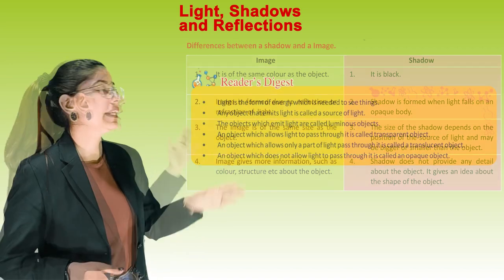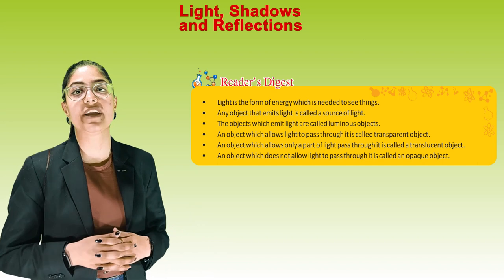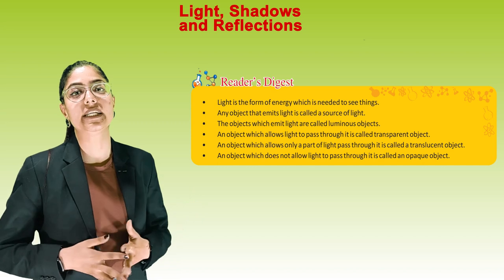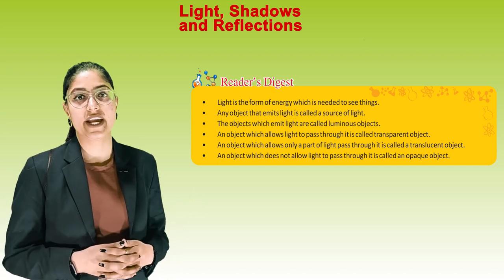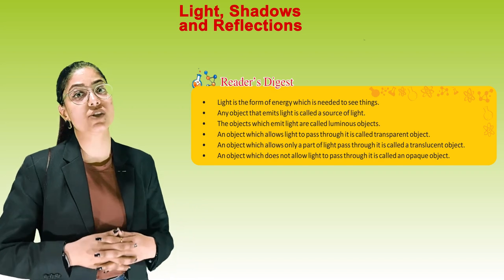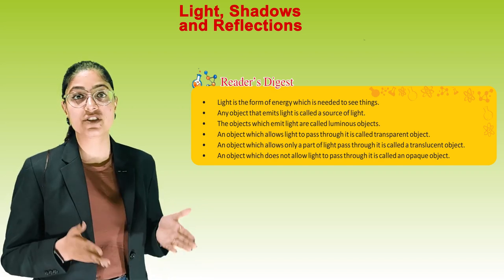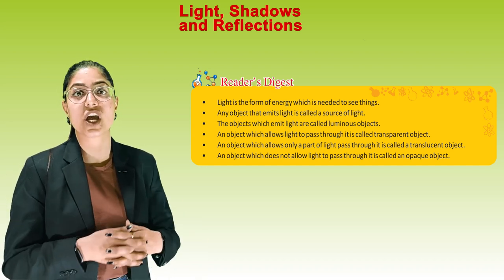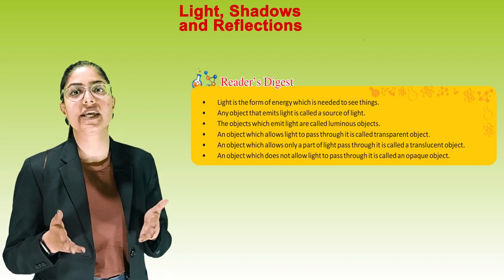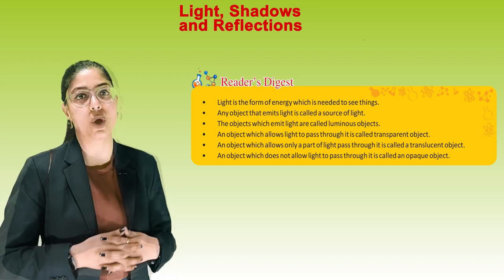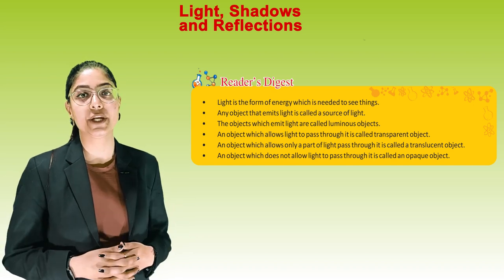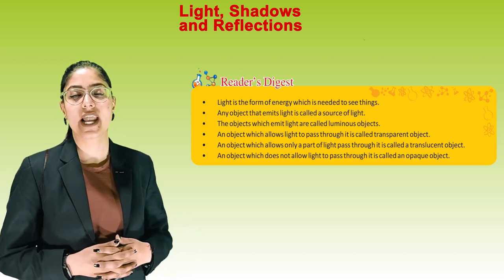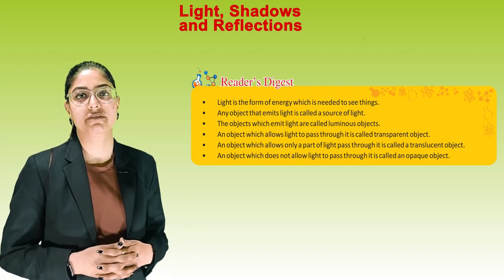Quick revision. Light is the form of energy which is needed to see things. Any object that emits light is called a source of light. Objects which emit light are called luminous objects. An object which allows light to pass through it is called a transparent object. An object which allows only a part of light to pass through is called a translucent object. An object which does not allow light to pass through is called an opaque object. Thank you, bye-bye.